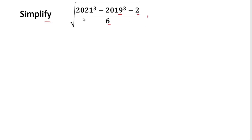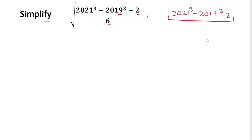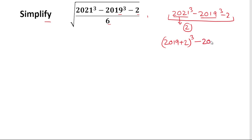For solving this, first of all we will solve the numerator value, which is 2021 cubed minus 2019 cubed minus 2. If we solve this, the problem will be much easier for us. Notice that 2021 is 2 more than 2019, so we can write 2021 as 2019 plus 2, whole cube, minus 2019 cubed as it is, minus 2.